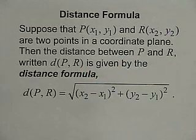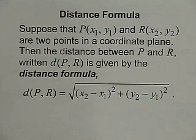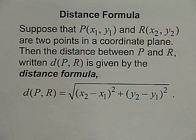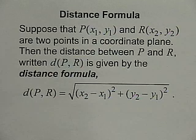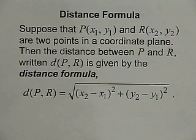Another thing we'll look at today is the distance formula. You may have already seen the Pythagorean theorem used to find the missing side of a right triangle, but you can also use it to find the distance between two points on a coordinate plane. Suppose that P (x1, y1) and R (x2, y2) are two points in a coordinate plane. The distance between P and R, written D(P, R), is given by the distance formula: the distance equals the square root of (x2 minus x1) squared plus (y2 minus y1) squared.